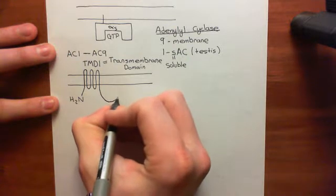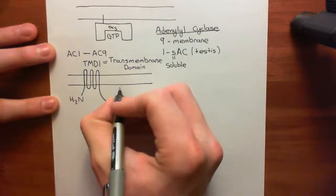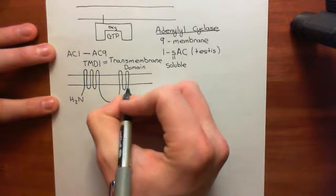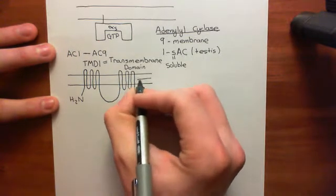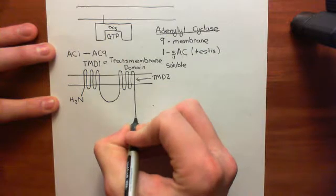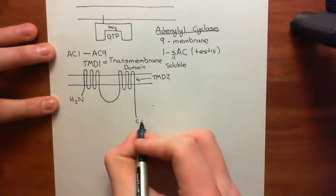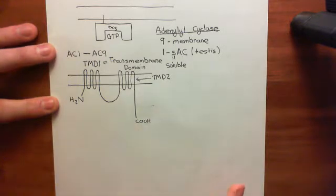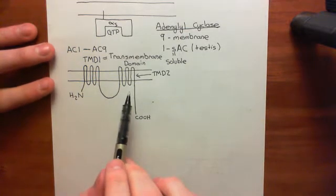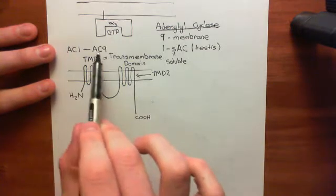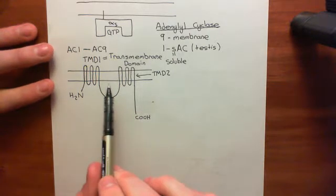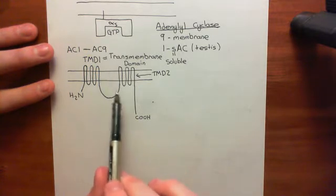You then have a loop that's intracellular between transmembrane domain 1 — this first cluster of six membrane-spanning alpha helices — and then transmembrane domain 2, which is a second cluster of six membrane-spanning alpha helices. This second cluster is known as TMD2, transmembrane domain 2. You then have a small domain intracellularly before finishing with the carboxylic acid terminus of the polypeptide. This is the membrane-spanning topology of an adenylyl cyclase enzyme — a single polypeptide with nine different forms having different amino acid sequences but the same membrane-spanning topology.